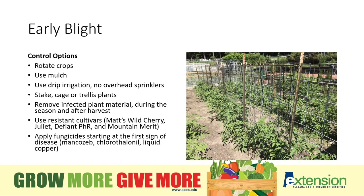To be successful in controlling early blight, we recommend using a combination of methods to prevent disease. First, we recommend rotating to other types of vegetables for two to three years between tomato crops. We also recommend using mulch to create a barrier that prevents the splashing of spores from crop debris and residue from previous seasons. We also recommend using drip irrigation and avoiding overhead sprinklers to keep the leaves dry. We also recommend staking, caging, or trellising the plants — getting the plants up off the ground on wire cattle panels to provide better drying conditions and reduce the amount of disease.